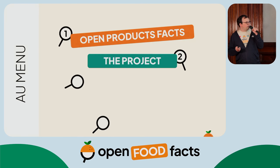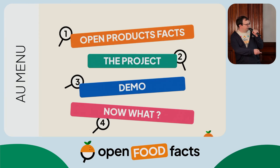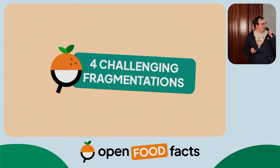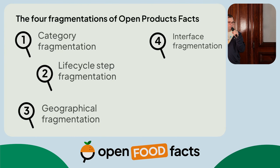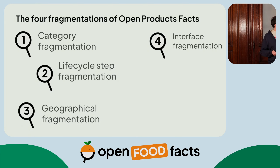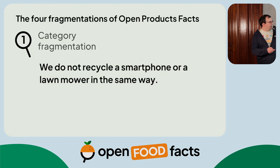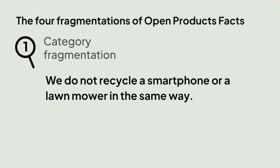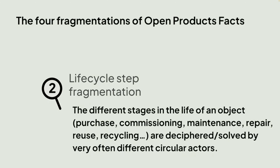So I will briefly talk about Open Product Facts. And I will do a demo of something we've been baking on the mobile app. We have four challenging fragmentations with Open Product Facts. The first one is category fragmentation. You do not recycle a smartphone or a lawnmower in the same way, so we have to treat those objects differently in the way we show, for instance, knowledge panels.